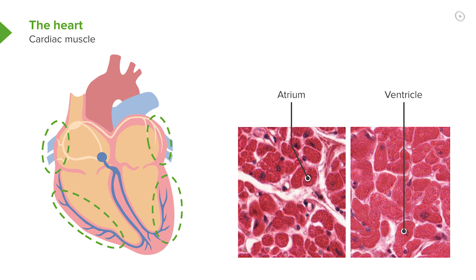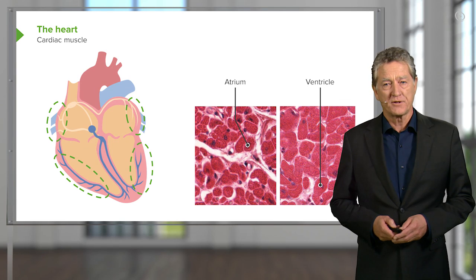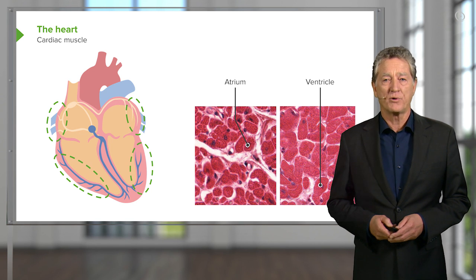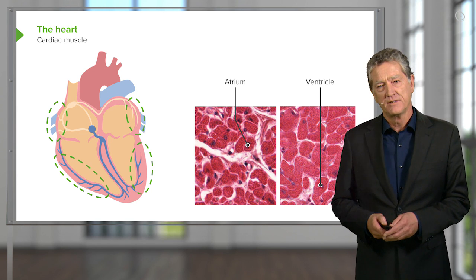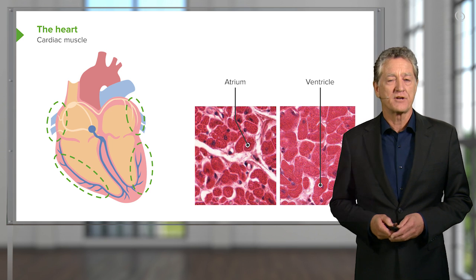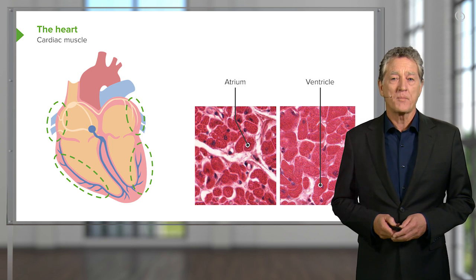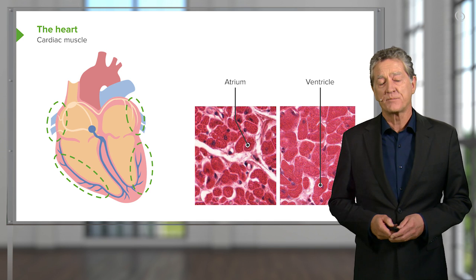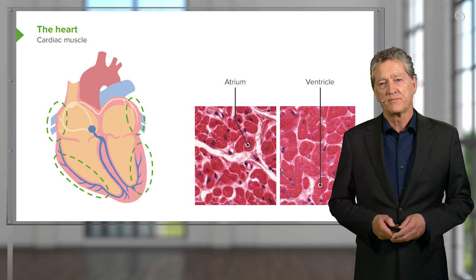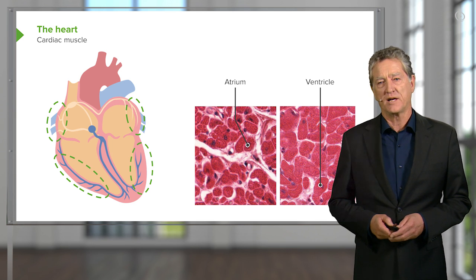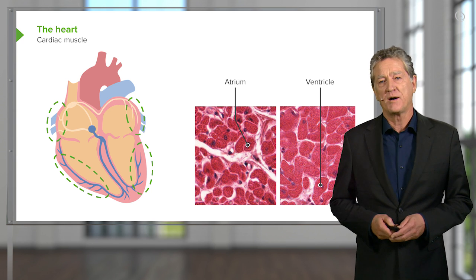That's because the atria are only pumping blood into the left or right ventricle. The ventricles, on the other hand, are pumping blood under pressure into the lungs or into the systemic circulation through the aorta. Therefore, the pump needed has to be a lot stronger, so the cardiac muscle fibres in the ventricle are going to be stronger, larger, and wider, because they have to have that stronger pumping action.